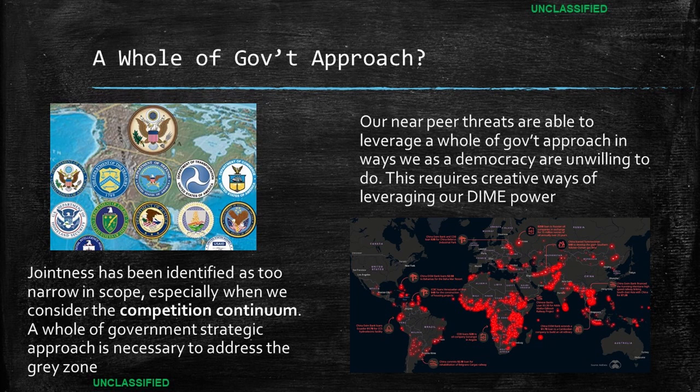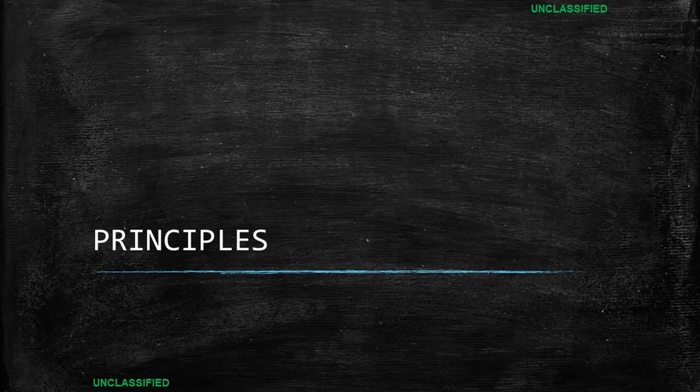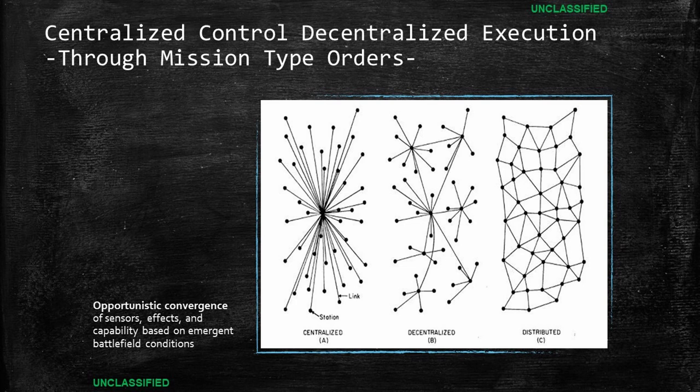This is particularly applicable when we talk about competitive activities short of war and gray zone activities. The JADO concept is still in development, but the Doctrine Center has pulled six core ideas applicable to operations today. The first is Centralized Control, Decentralized Execution Through Mission-Type Orders. This is nothing new — however, we've created a system for the violent extremist fight which runs counter to the decentralized execution portion. This return to the foundational premise of air power will allow decentralized commanders to execute with disciplined initiative, even if disconnected from higher headquarters.